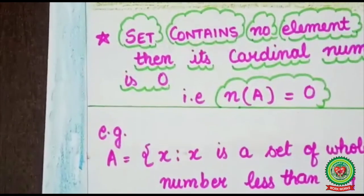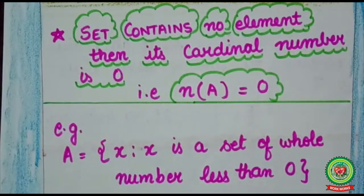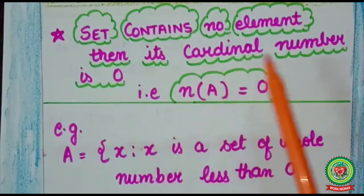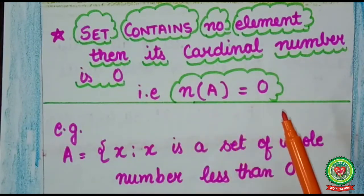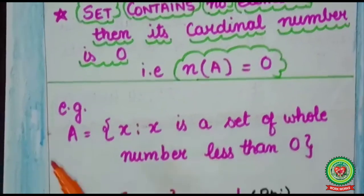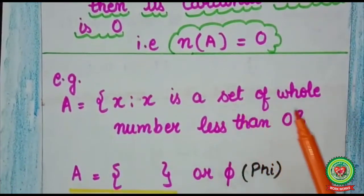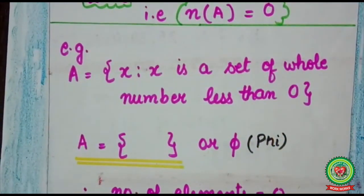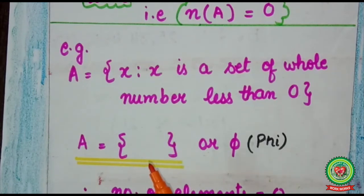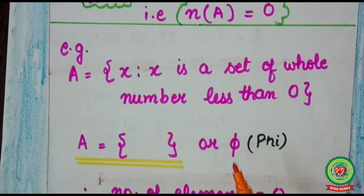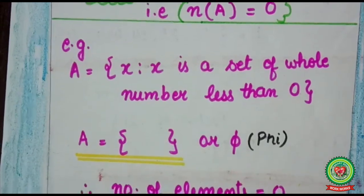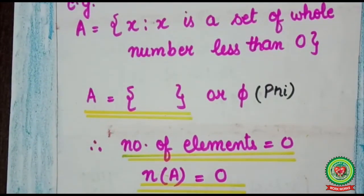Now let's understand sets which contain no element. If a set contains no element, then its cardinal number is 0, that is n(A) = 0. For example, set A = {x such that x is a whole number less than 0}. Whole numbers start from 0, so there is no whole number less than 0. Therefore no element comes in set A — we write empty brackets, or the symbol phi. The cardinal number of A equals 0, so n(A) = 0.